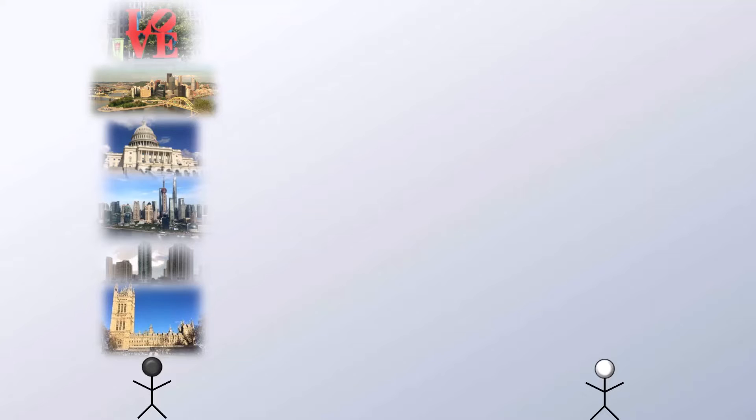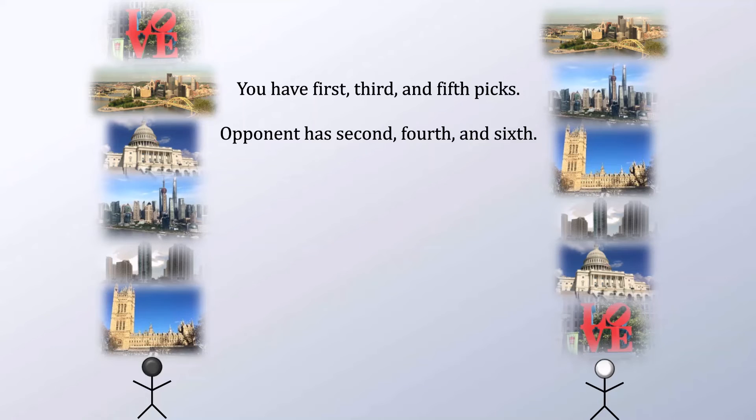Your opponent has different preferences. Their favorite vacation spot is Pittsburgh, after that Shanghai, after that London, in fourth Miami, in fifth Washington, and finally Philadelphia. You are going to divide these via a draft. You will have the first, third, and fifth picks. Your opponent will have the second, fourth, and sixth.